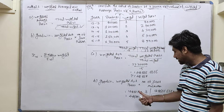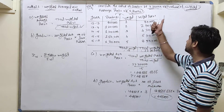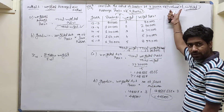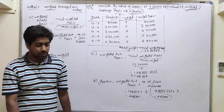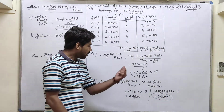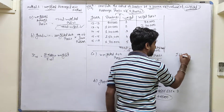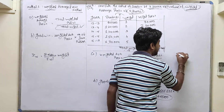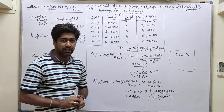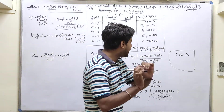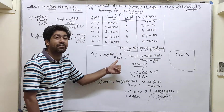Finally, multiply weighted average profit by the number of years of purchase to get goodwill. This is the second method and it is an easy method. Today, you have to do Illustration Number 3 as homework. In Illustration 3, the question is only about calculation of weighted average profit.